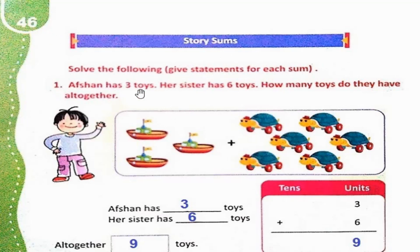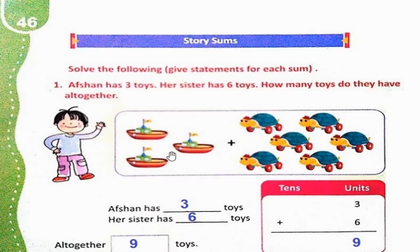Question 1: Afshah has 3 toys. Her sister has 6 toys. How many toys do they have altogether? Afshah has 3 toys, and Afshah's sister has 6 toys.